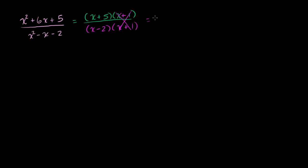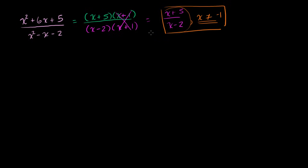So we can say this is equal to (x + 5) over (x − 2). But for them to truly be equal, we have to add the condition that x cannot be equal to negative 1. Because if x equals negative 1, the original expression is undefined. This simplified form by itself is defined at x = −1, so we must add that condition for this to truly be equal to the original expression.